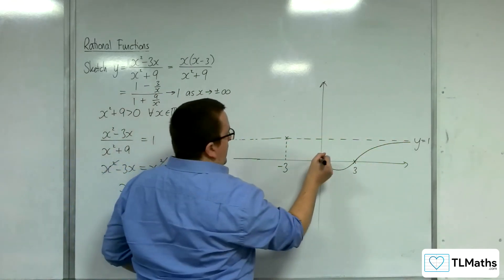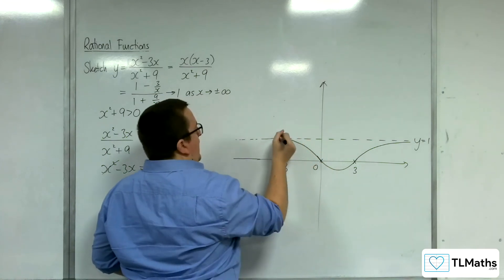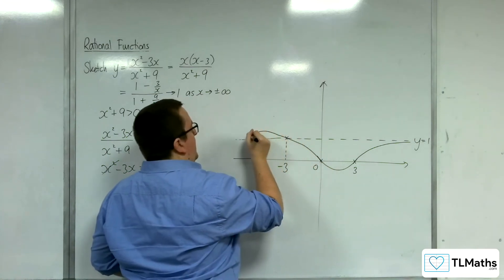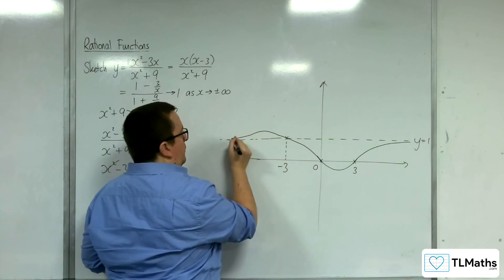But we can cross the horizontal asymptote there. And then I'm going to have to come back on myself in order to tend towards the asymptote.